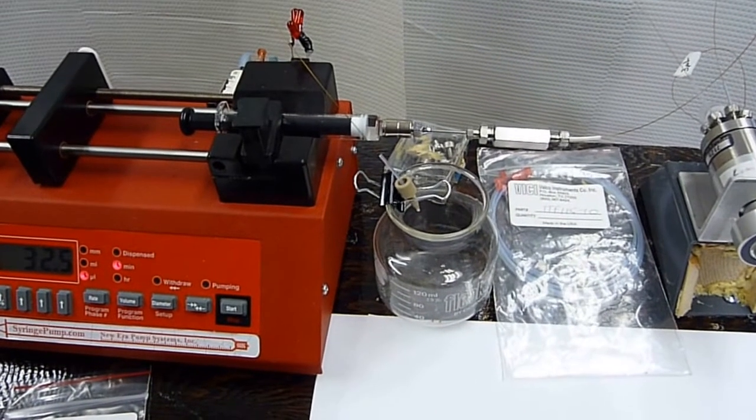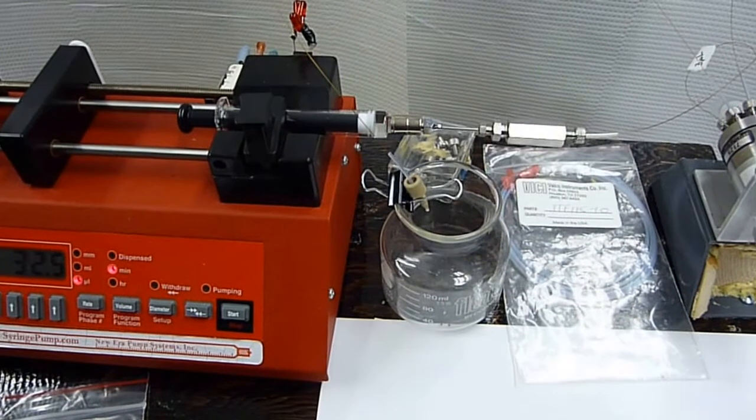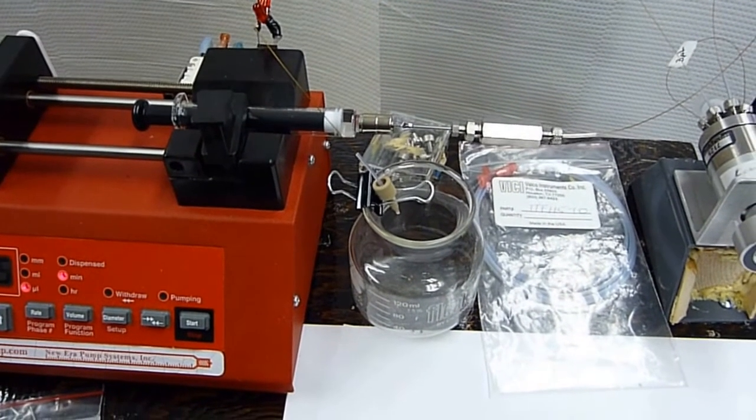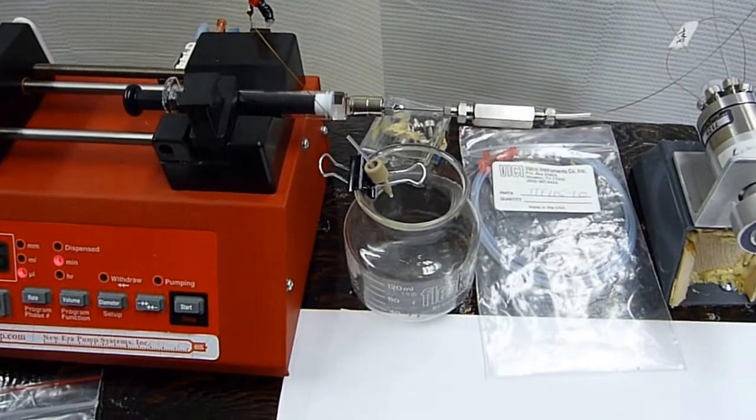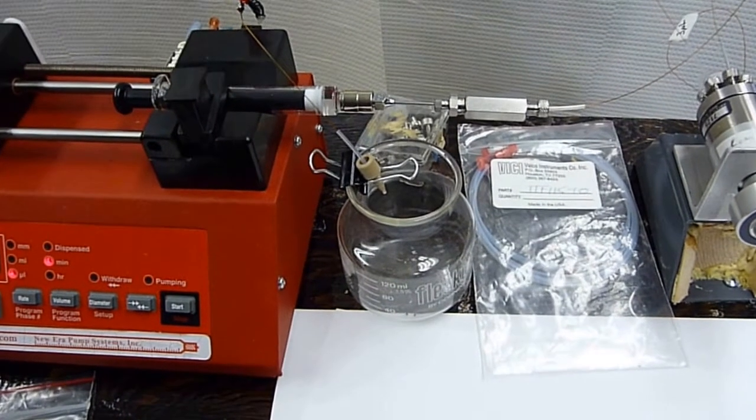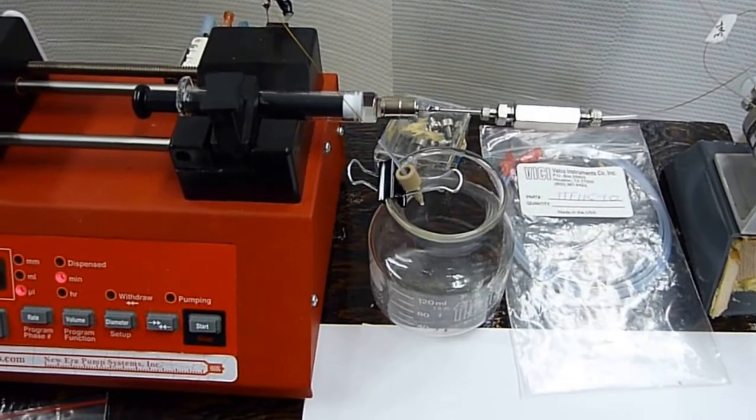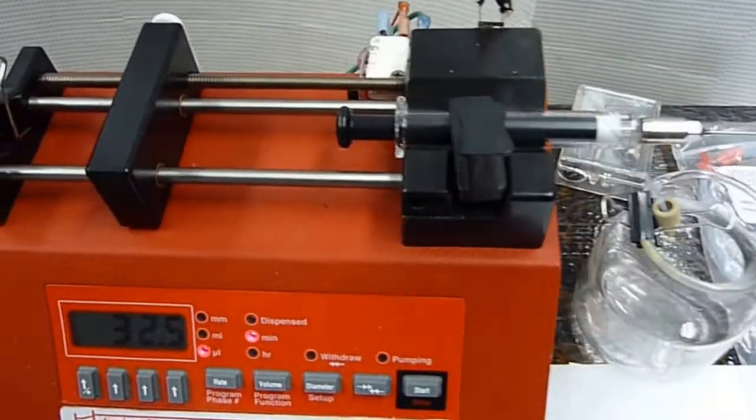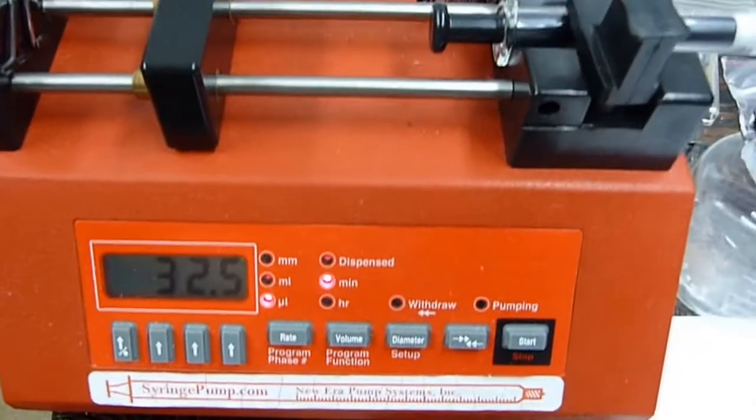This is a description of the setup for using straight chloroform to introduce a sample into the mass spec. Let me go over the components, starting with the syringe pump. So this is our typical syringe pump.